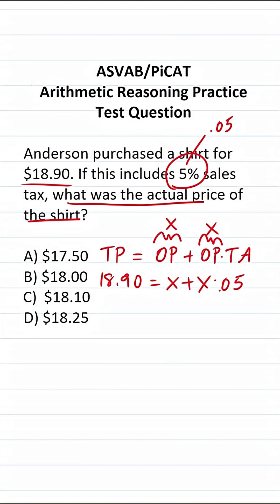Let's go ahead and do this the old-fashioned way. Imagine there's a one in front of this X. This becomes 18.90 equals 1X plus 0.05X. What is 1X plus 0.05X? Well, that's going to become 1.05X.